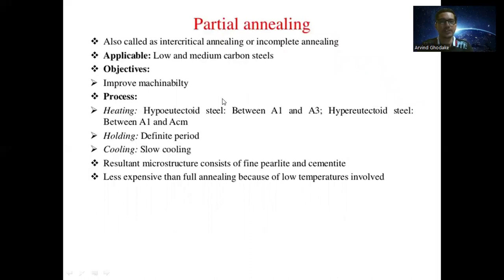The next type is partial annealing, also called intercritical annealing or incomplete annealing. It is applicable for low and medium carbon steel. The objective is to improve machinability. The process involves heating hypo-eutectoid steel between A1 and A3 temperatures, and hyper-eutectoid steel between A1 and Acm temperatures.